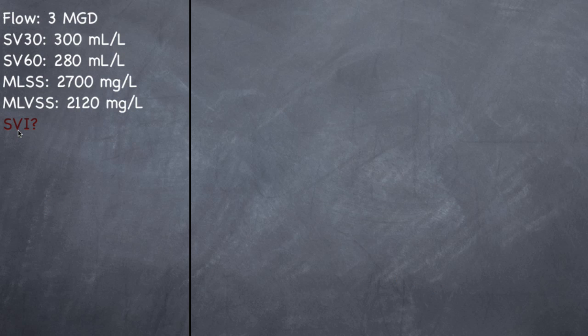All right, SVI. SVI stands for Sludge Volume Index, and it's a really easy problem. It's not that labor intensive. So we have a flow of 3 MGD, a settling volume SV at 30 minutes of 300 milliliters per liter, a settling volume at 60 minutes of 280 milliliters per liter, MLSS 2700, MLVSS 2120. Too many SSs. They want to know what the SVI is. SVI basically means how well the sludge is going to settle in your secondary clarifier, the tendency for it to settle.